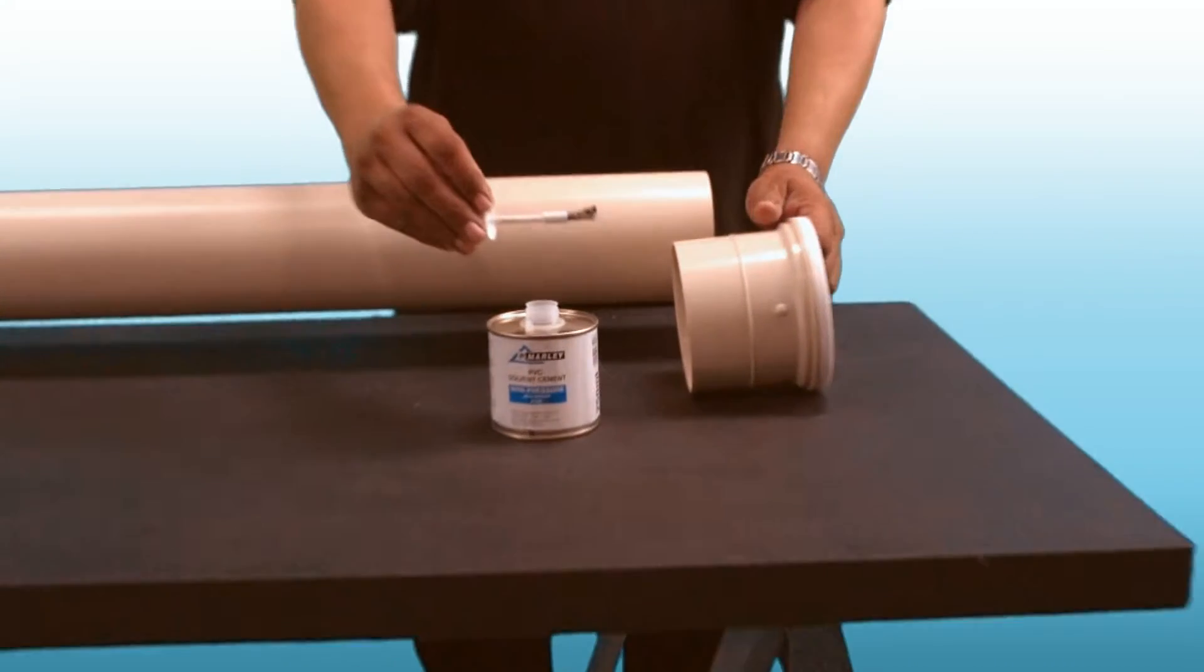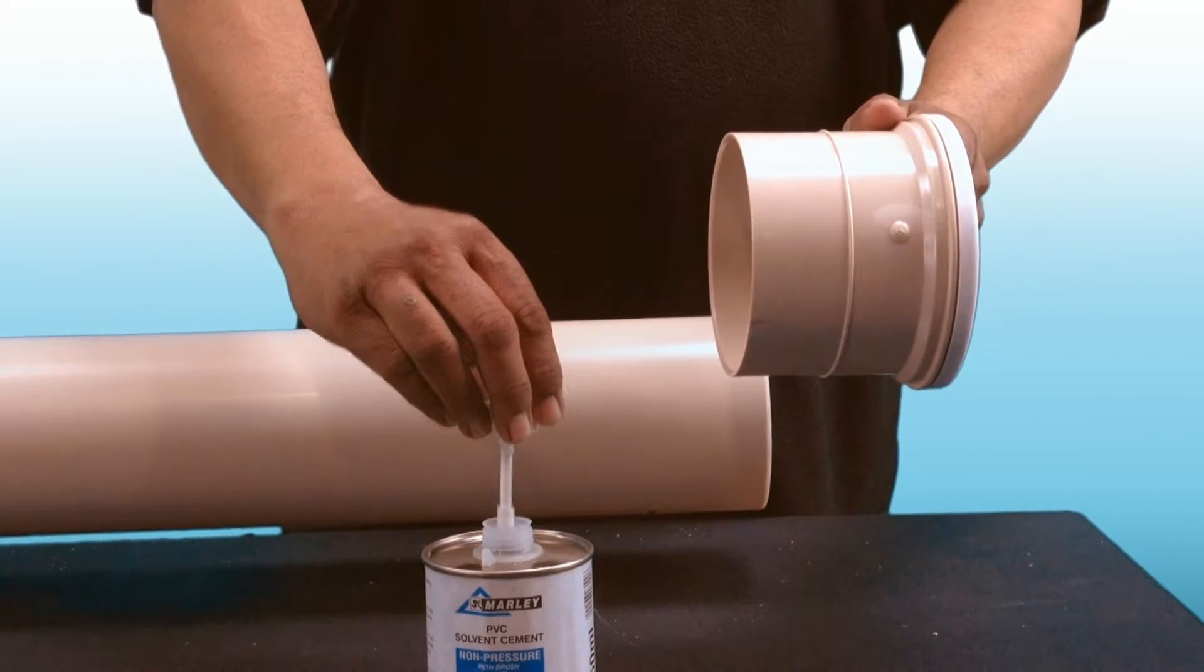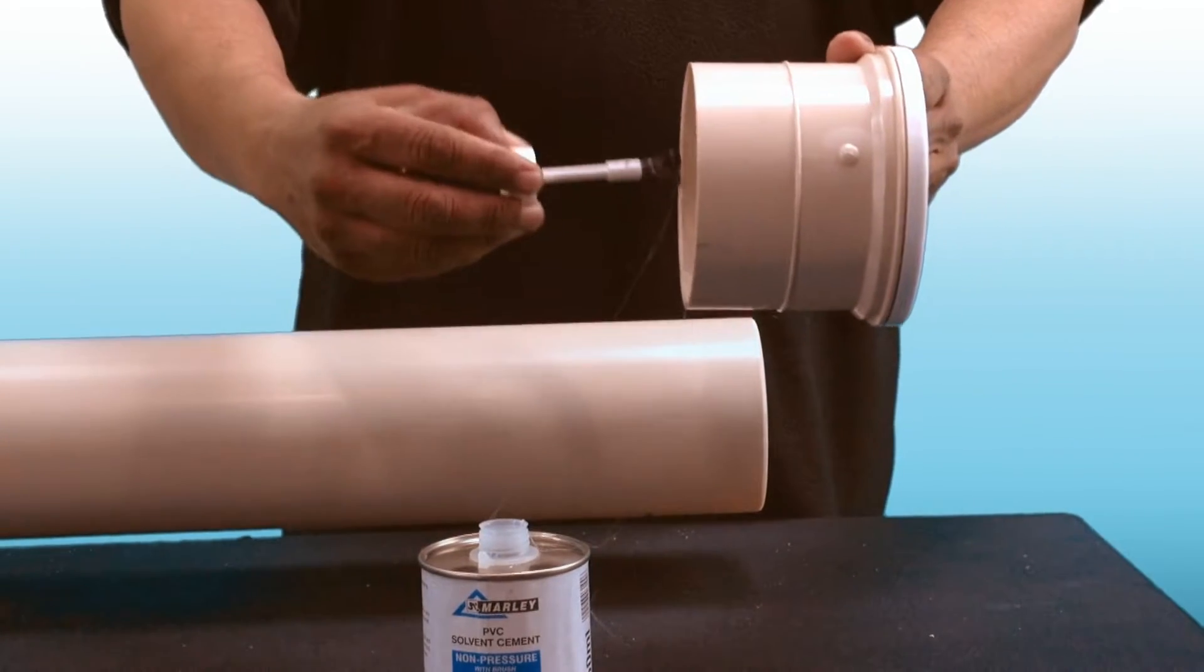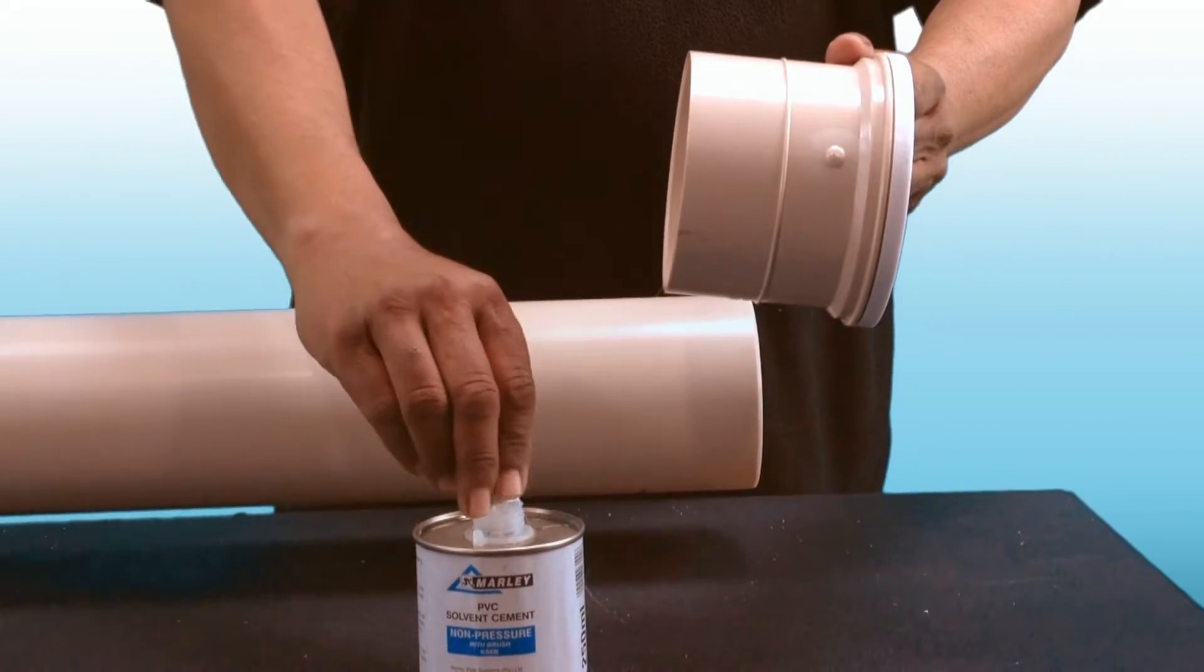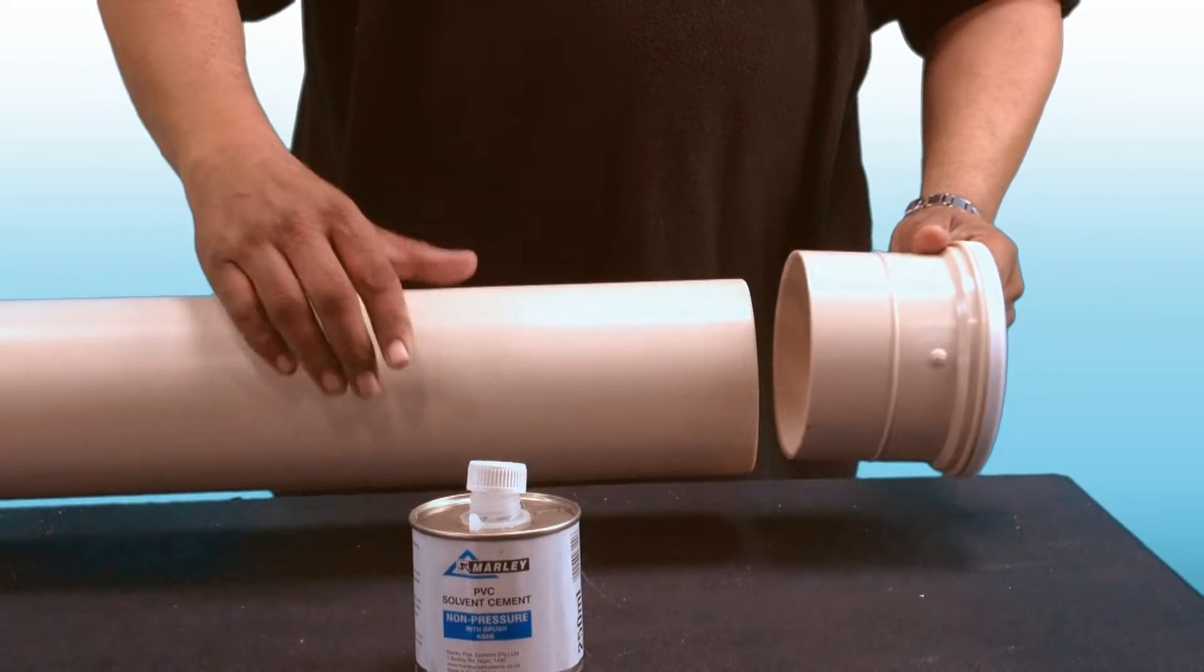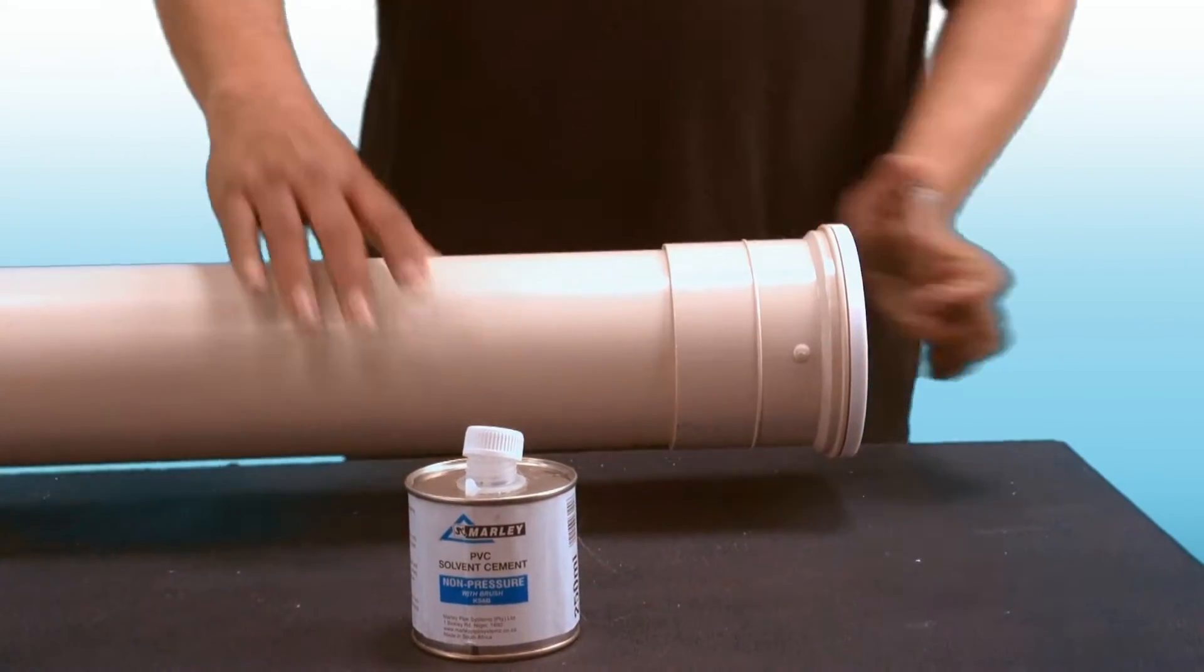Coat the outside of the pipe end up to the insertion depth, as well as the inside of the fittings with solvent weld and join together immediately by pushing the pipe firmly into the fitting up to the insertion depth. Remove any surplus solvent weld immediately with a clean, dry cloth.